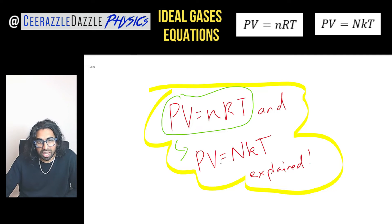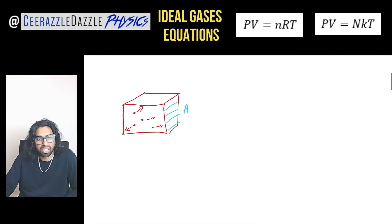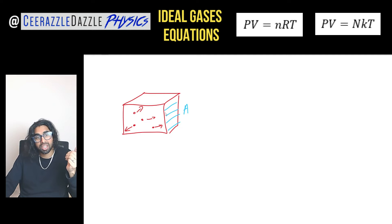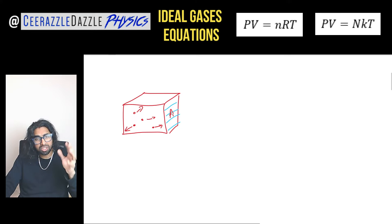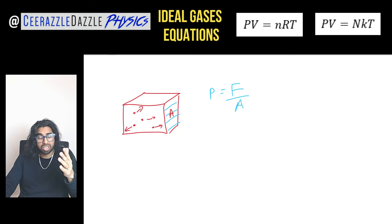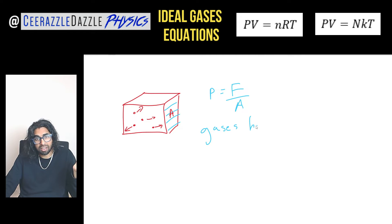Hopefully you have a basic understanding of what gas is and how pressure works inside a gas. I have a box containing gas, and as you can see the particles are moving around, travelling across and colliding with the walls of the container. Each collision exerts a force. If we look at an area A, you've got forces acting over a unit area, and therefore you have pressure, because pressure equals force divided by area. So gases have pressure — that's our starting point.